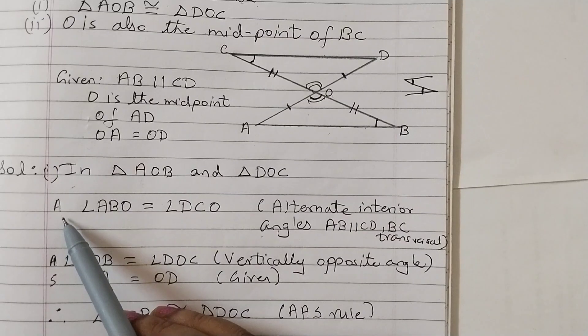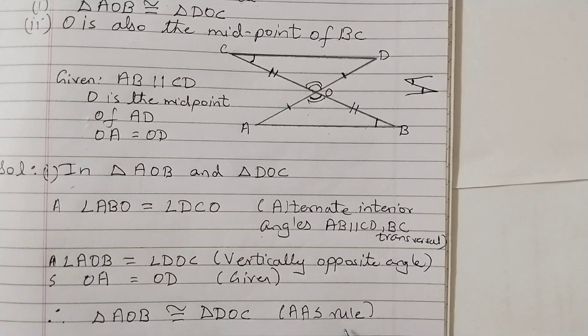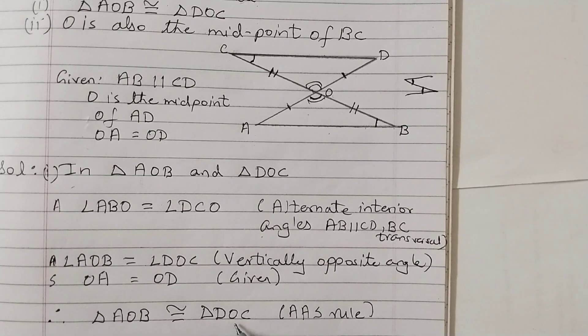Therefore, angle, angle, side. So according to AAS rule, triangle AOB is congruent to triangle DOC.